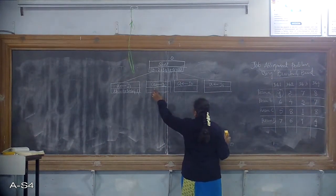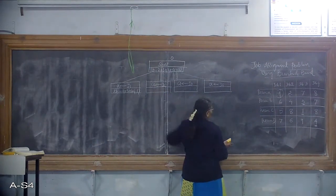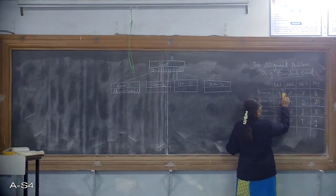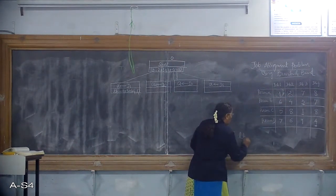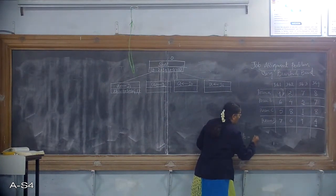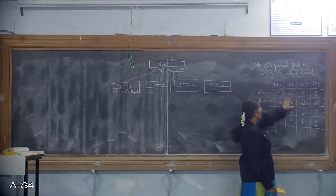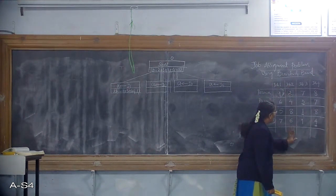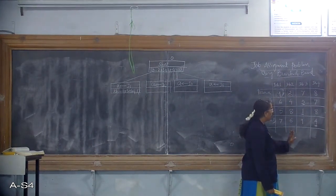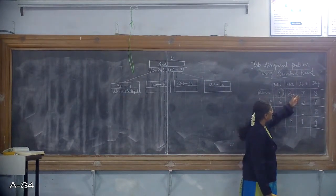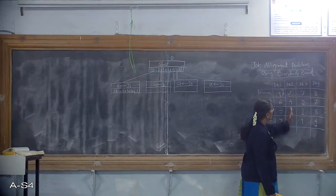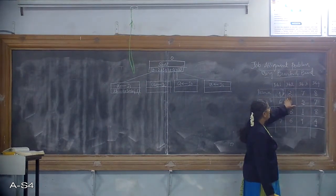For the second node, we want to assign job J2 to person A. The value 2 is fixed now, and this whole column is frozen temporarily. For the remaining allocation, you are not going to pick any values from this frozen column.